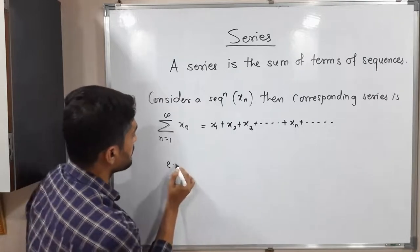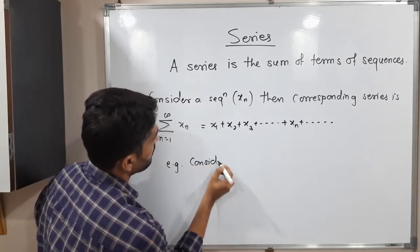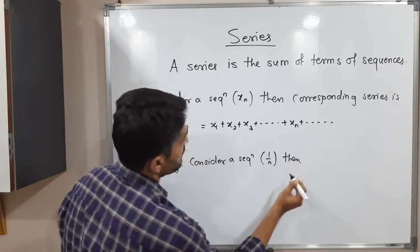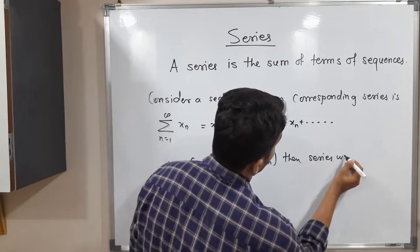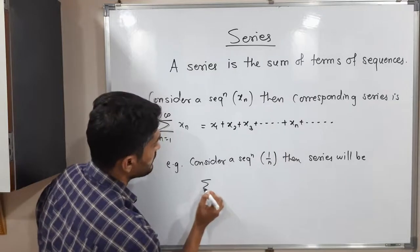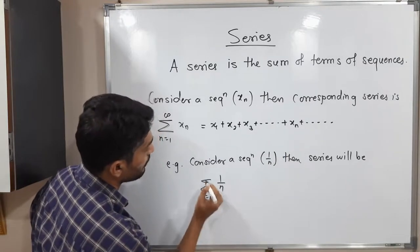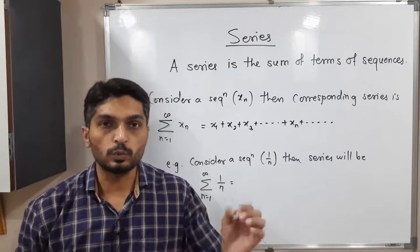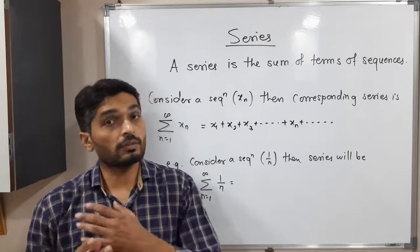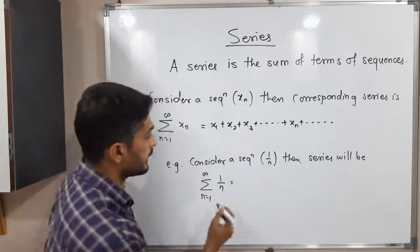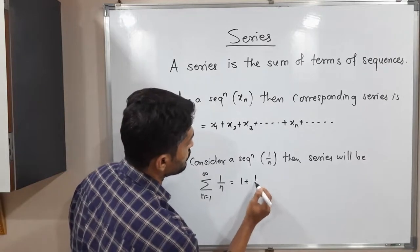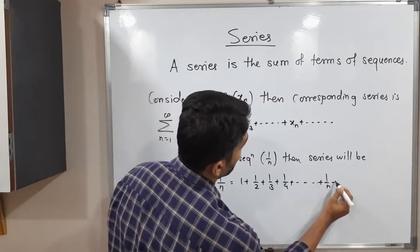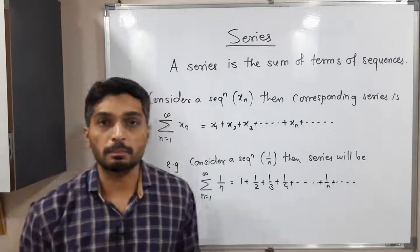Let us take one particular example. Consider the sequence 1/n. Then the corresponding series will be summation 1/n, n running from 1 to infinity. We are familiar with the sequence 1/n, whose terms are 1, 1/2, 1/3, 1/4 and so on. If we add all these terms, we get a series — that means summation 1/n equals 1 plus 1/2 plus 1/3 plus 1/4 plus and so on. We call it a series.